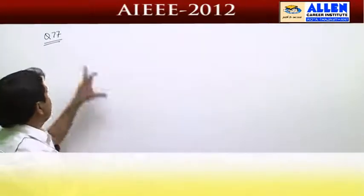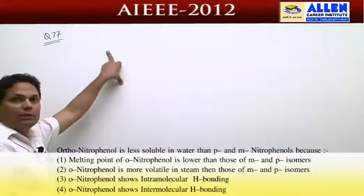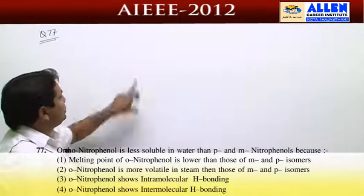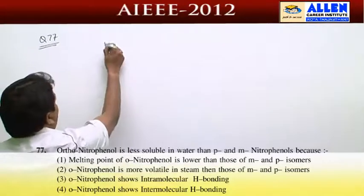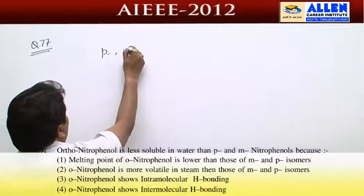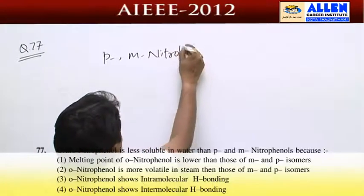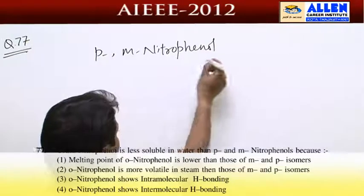Question number 77. Chemical bonding, hydrogen bonding application. In this question, para and meta nitrophenol. Theoretical question is ortho nitrophenol.